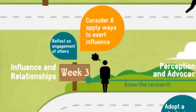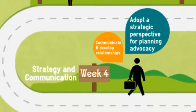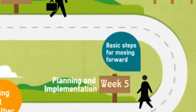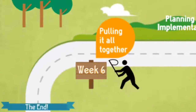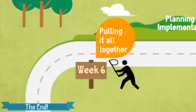It's an opportunity to think about how we engage others. Fourth, to adopt a strategic perspective in planning for our advocacy. This is our topic in week four when we look at strategy and communications. Fifth, to communicate more effectively, particularly within the development and strengthening of strategic relationships, also addressed in week four. And sixth, to plan and apply the basic steps using best practice to move an advocacy objective forward. We're going to cover planning and implementation in week five, and then pull it all together and examine some special topics in week six.